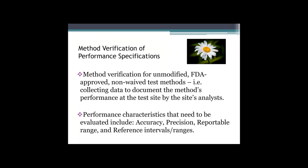CLIA states that method verification of performance specifications must be completed for all non-waived tests prior to implementation. What this means is that each time a facility brings in new testing, they must perform steps to ensure it is functioning as it is supposed to — to ensure that the environment, staff, equipment, and processes are functioning as the manufacturer intended. This is generally performed using known samples so that comparisons can be made. The specifications evaluated are accuracy, precision, reportable range, and identification of appropriate reference ranges. This requirement is not only applicable when a facility brings in new testing, but also when you move locations, since the environment has changed.